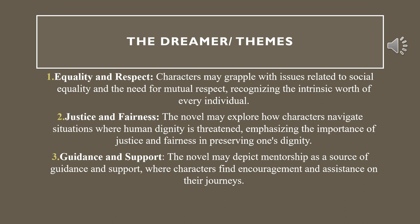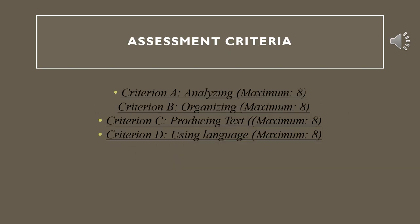In regard to the criteria that are going to be assessed on: Criteria A talks about analyzing — identifying and looking deeply into details, trying to understand through images, visual representations, text, references, and context. We're also going to look at organization in regard to paragraphing, your own writing style, producing text, your skill of analyzing, interpreting, justifying, and using language — including proper syntax, grammar, and punctuation.